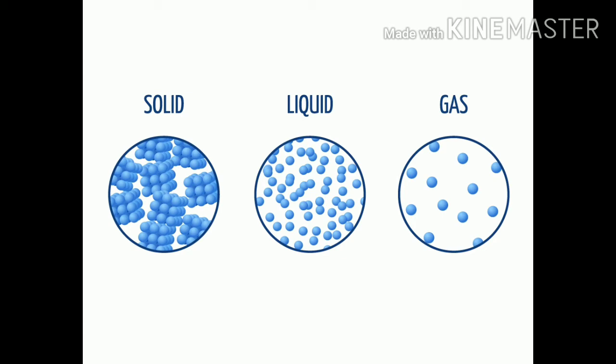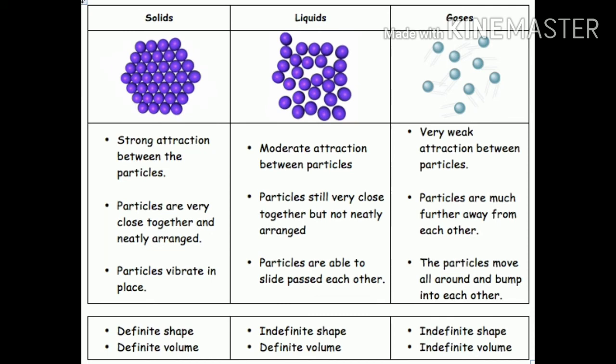Matter changes states through freezing, melting, evaporation and condensation. Yeh change karte hain alag-alag process se — kabhi evaporation se, kabhi freezing se, kabhi melting se, kabhi condensation se. Matter wo hota hai jinke andar mass ho aur jo space occupy karein. Hamaare aaspaas har ek cheez matter se milke bani hai.